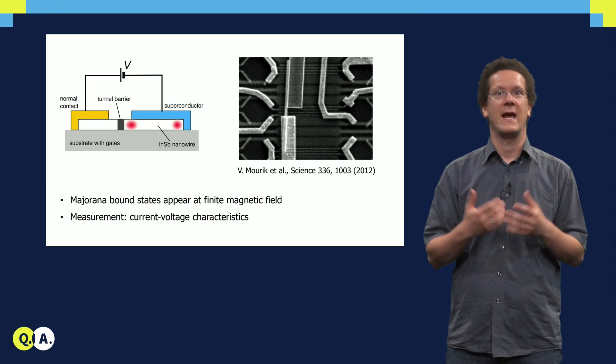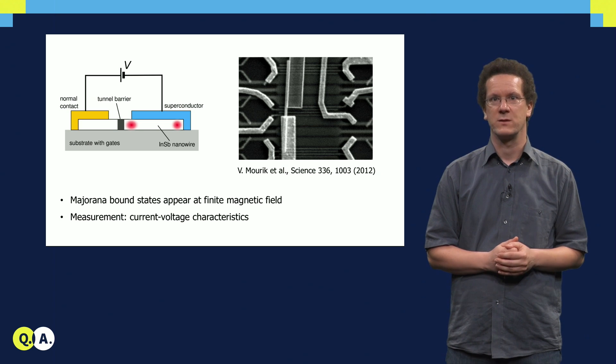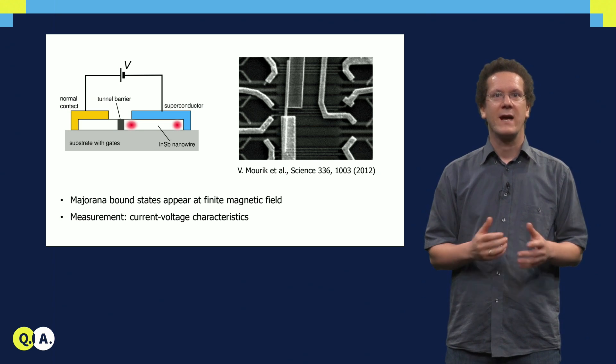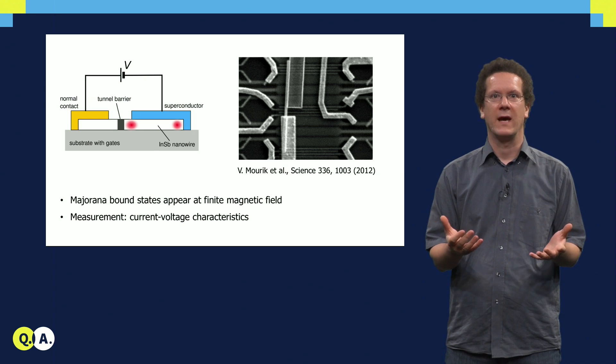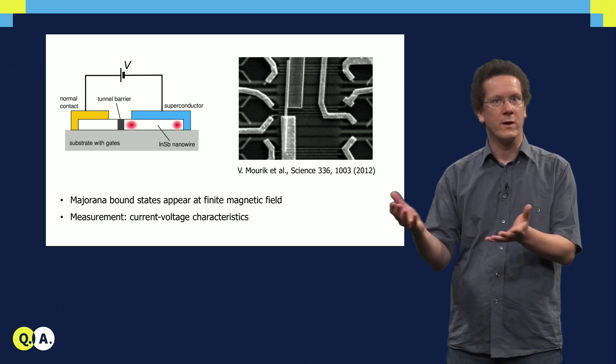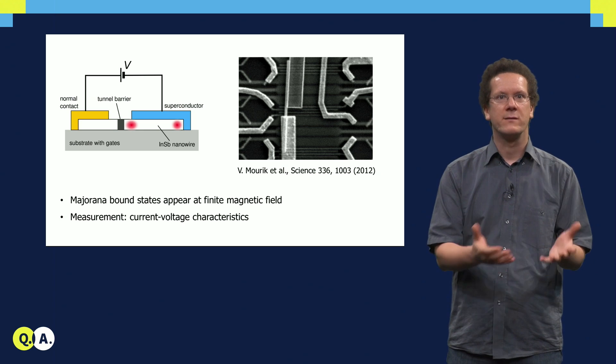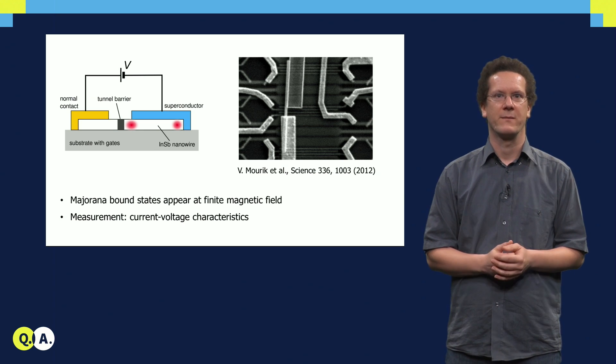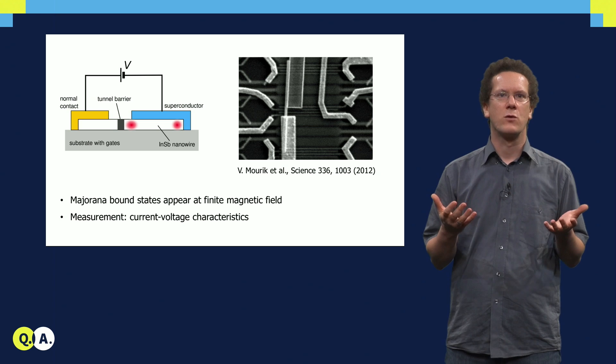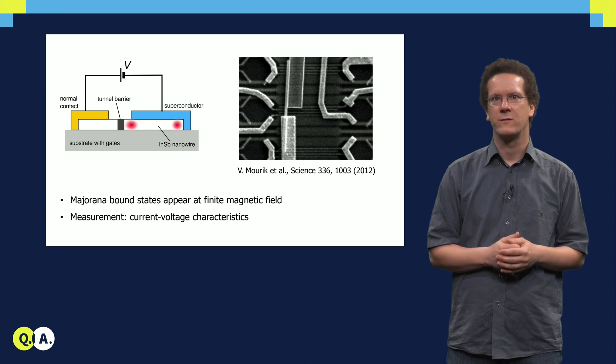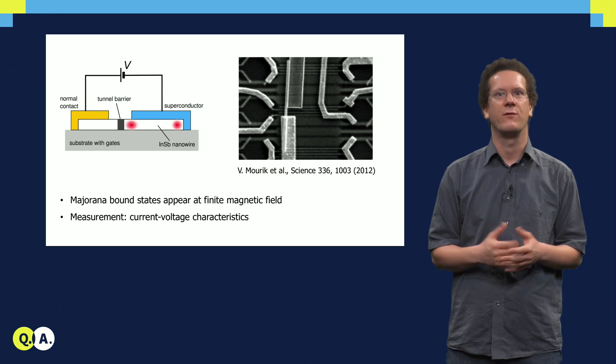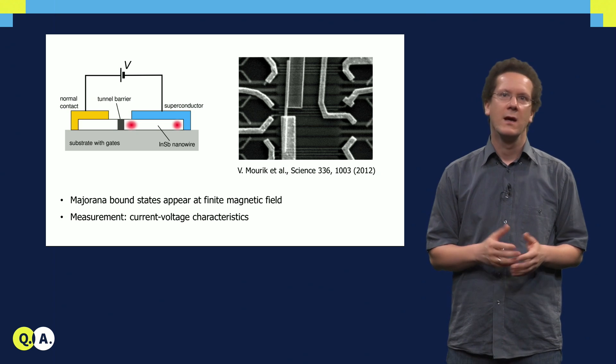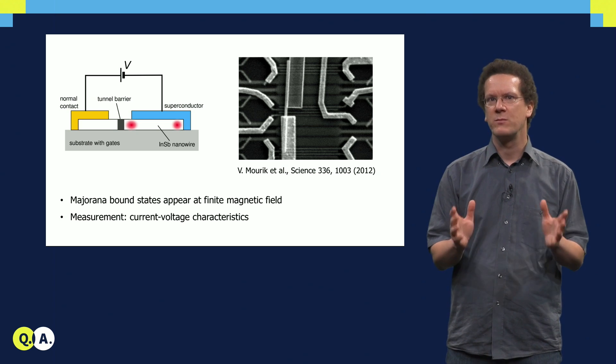It turns out that a standard current voltage measurement is enough. Apply a voltage between a normal contact and the superconducting part, where the Majoranas are located, and measure the current that flows across a tunnel barrier. This so-called conductance spectroscopy is one of the standard techniques to actually find Majorana bound states. I want to spend a little bit of time to explain how this works.